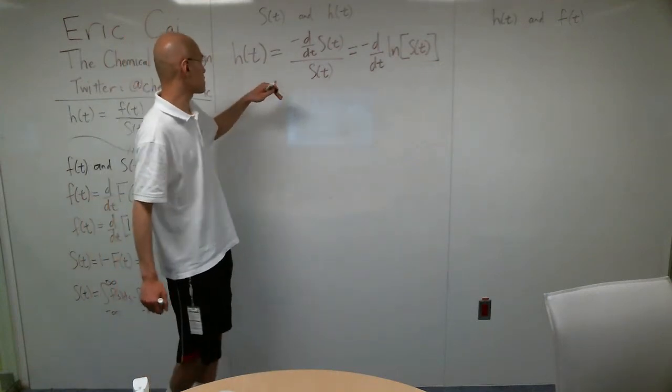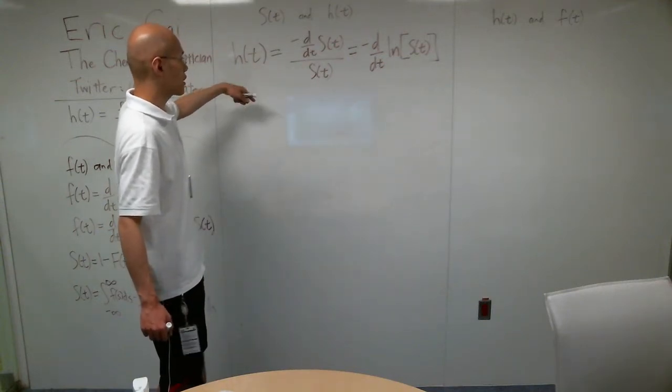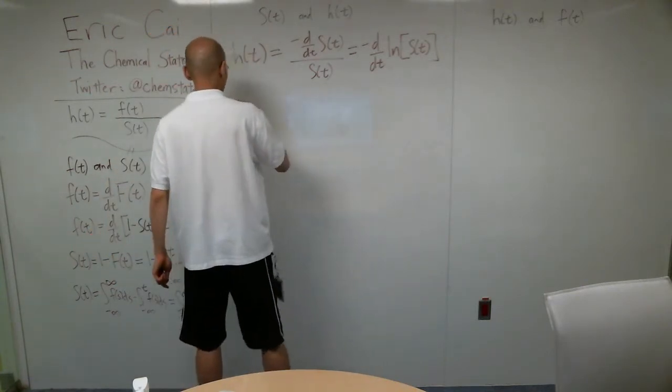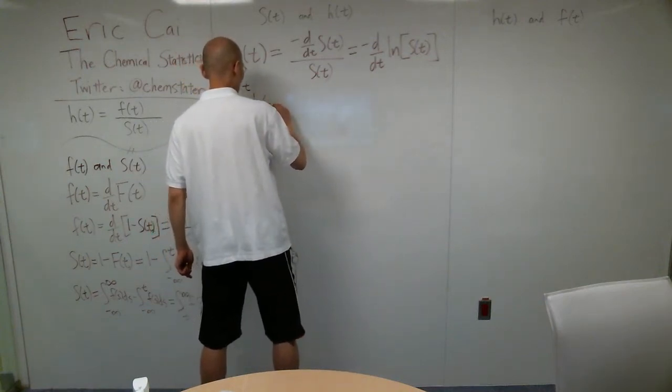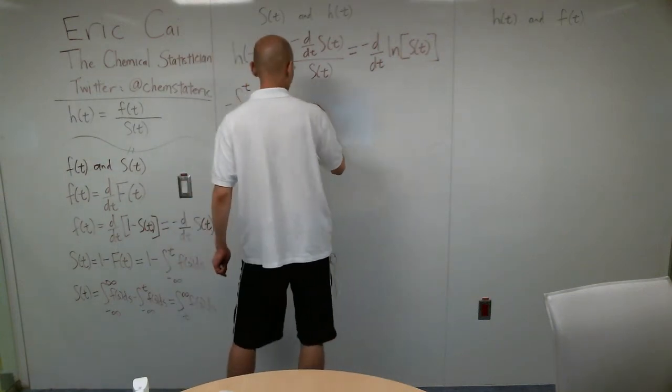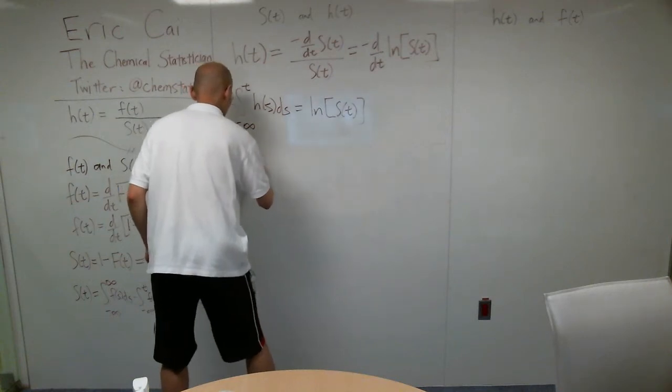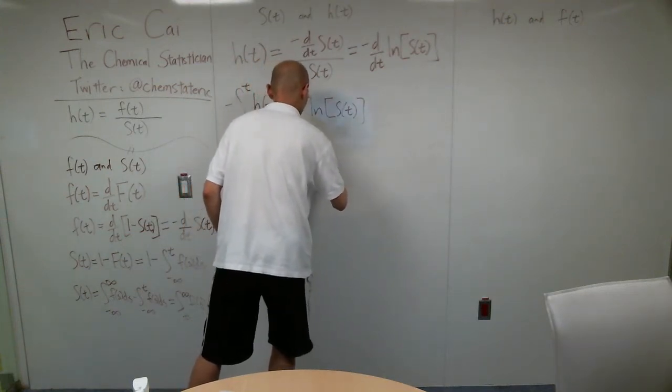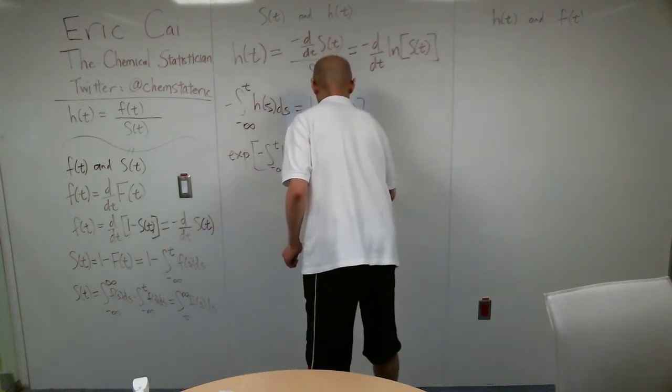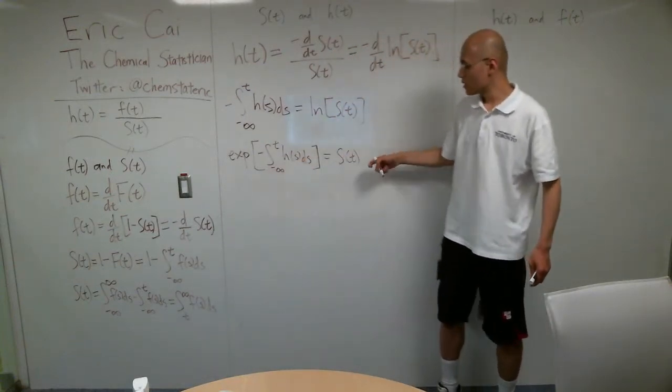Now, let's go the other way. Let's write S of t as a function of the hazard function. So we'll move the negative side over to the left. We're going to integrate, and then we're going to exponentiate. So let's do this first. So we're going from negative infinity to t of h of s ds. That's equal to the natural logarithm of S of t. So now we can exponentiate.